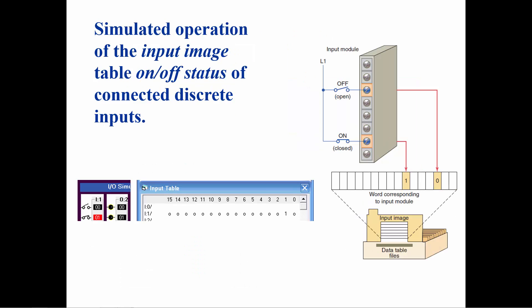When switches I colon 1 slash 0 and I colon 1 slash 1 are closed and open, the bit 0 and 1 values will alternate between 1 and 0.